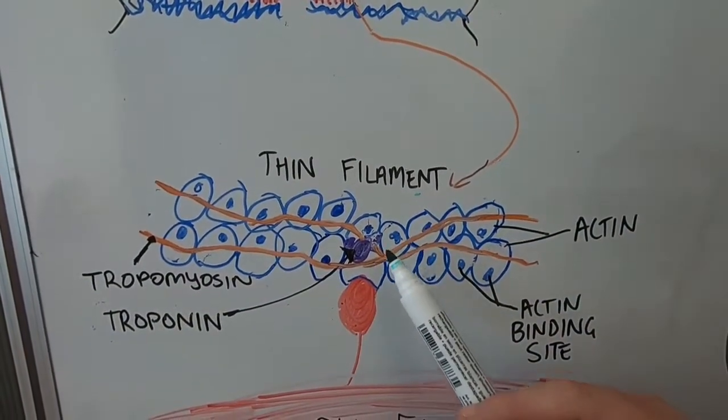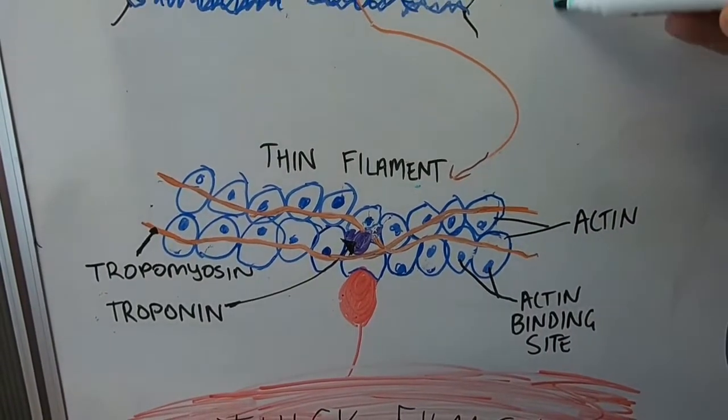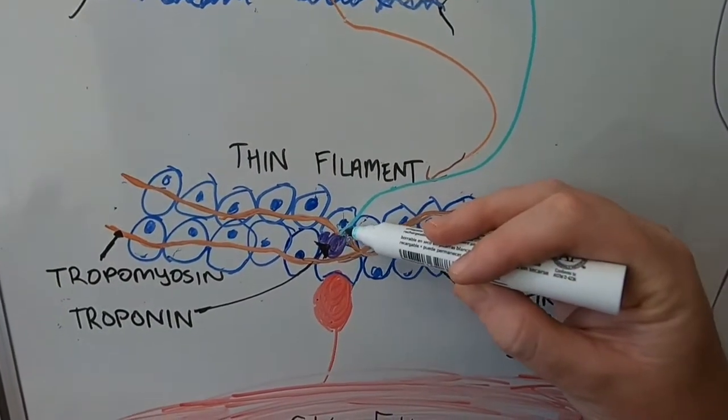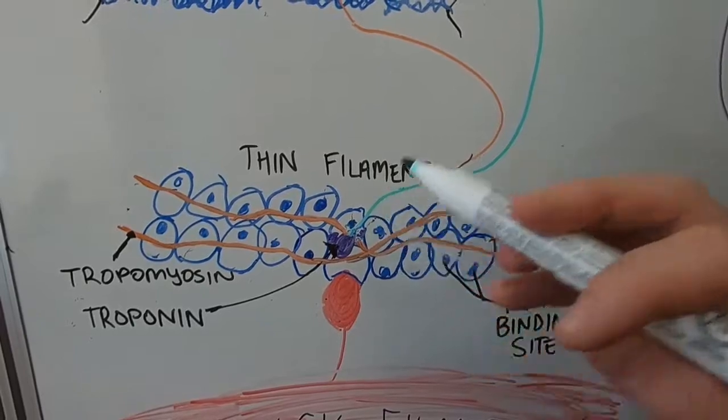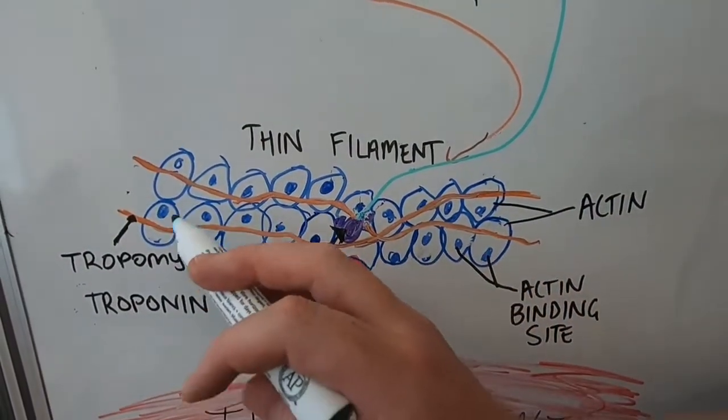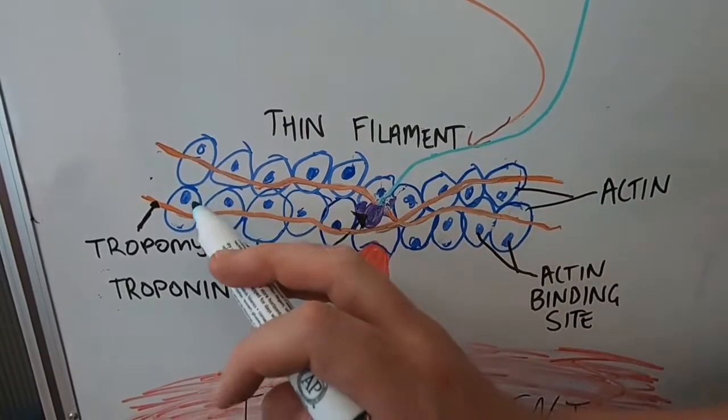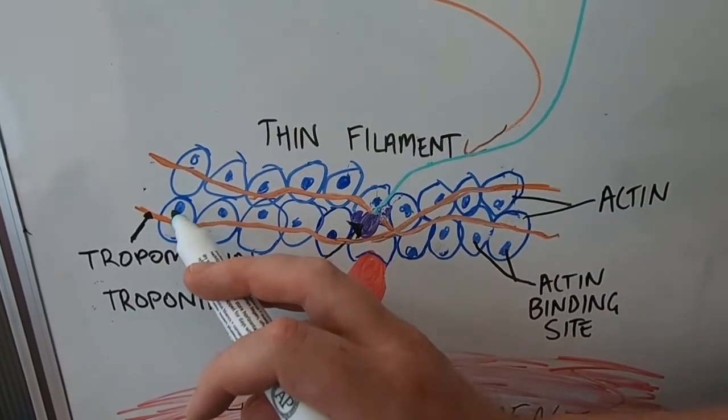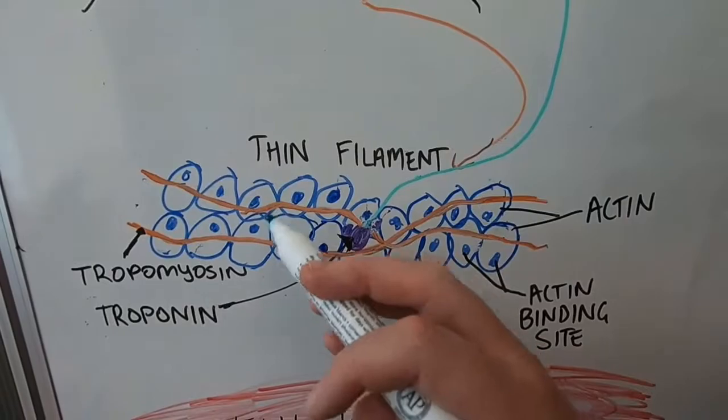However, when calcium comes along, it binds directly to troponin. By activating that troponin, troponin will then talk to tropomyosin, and tropomyosin will move out of the way so all these little actin binding sites in the blue here are now available.